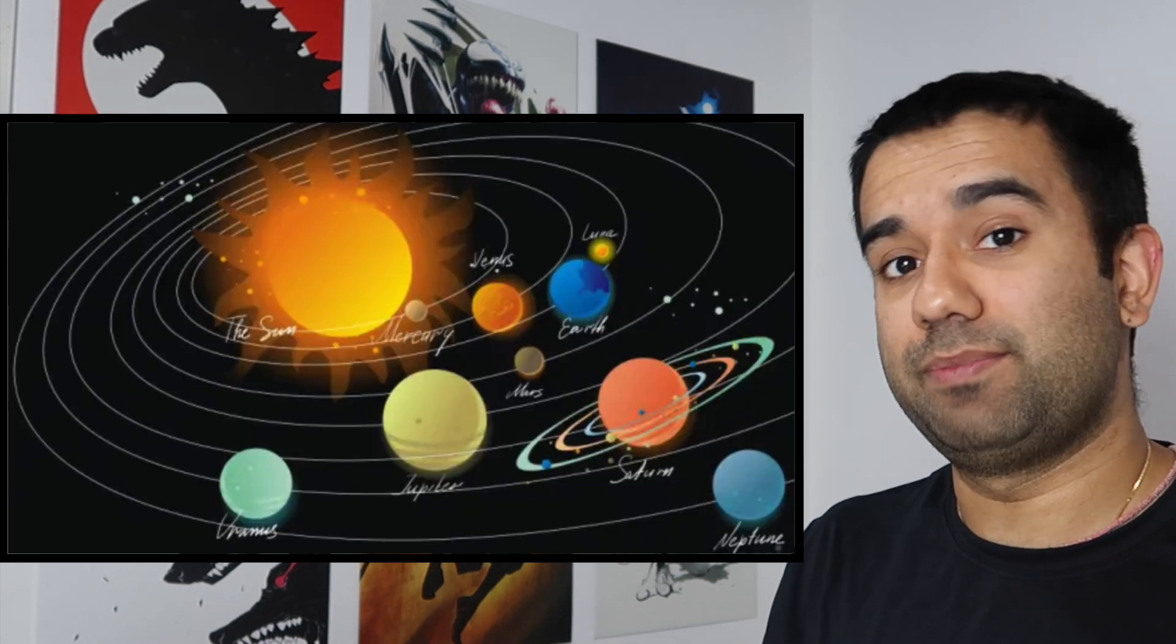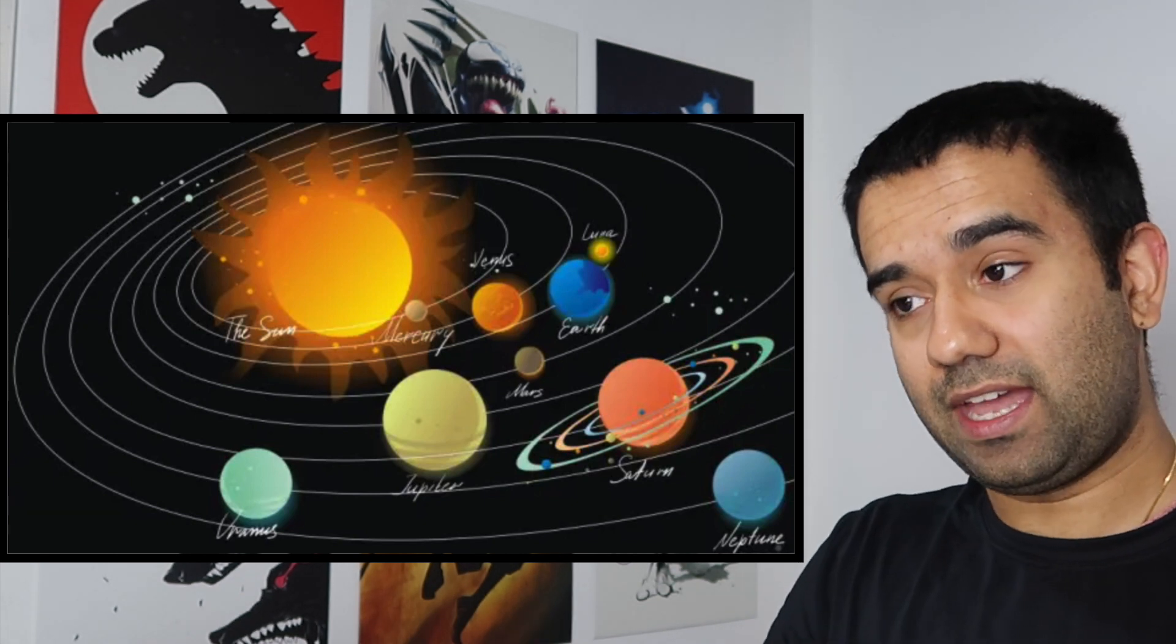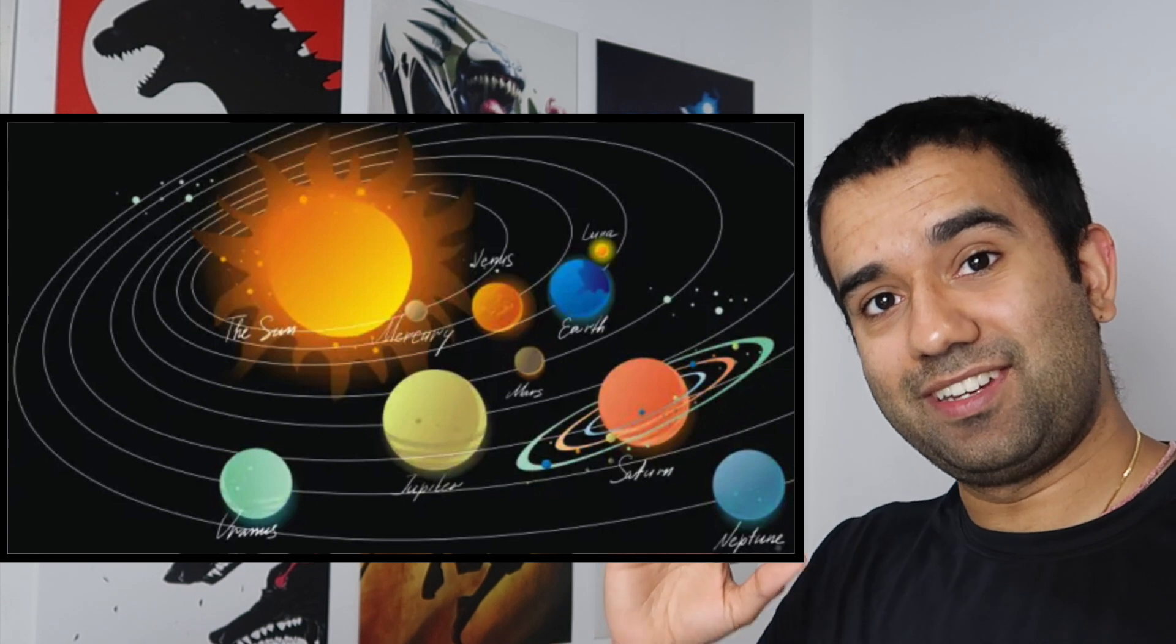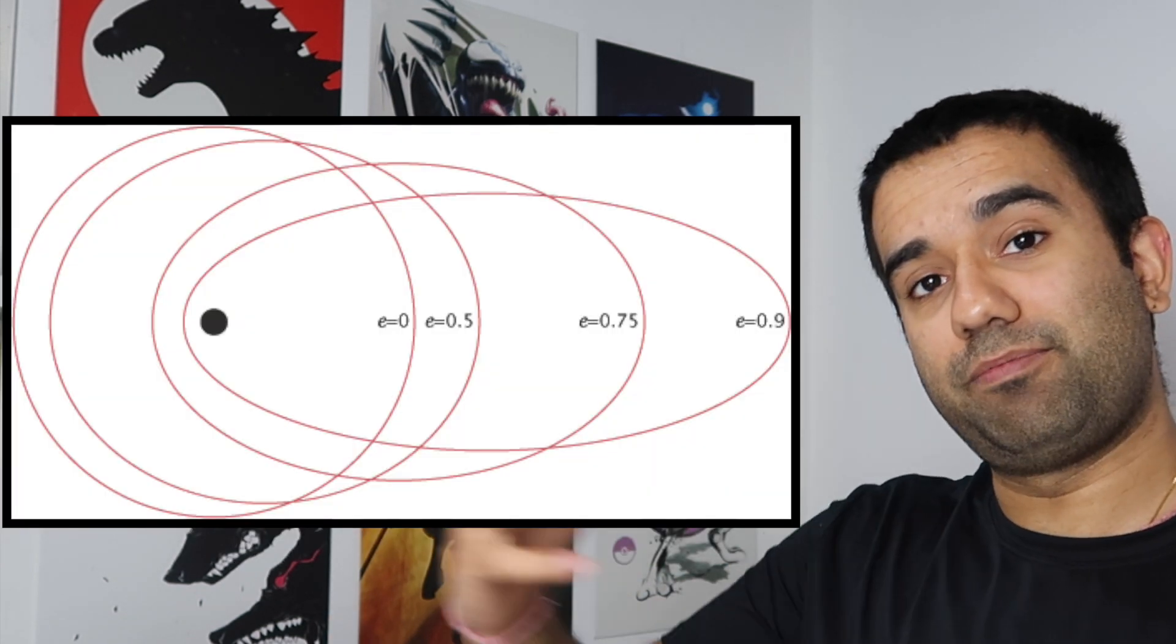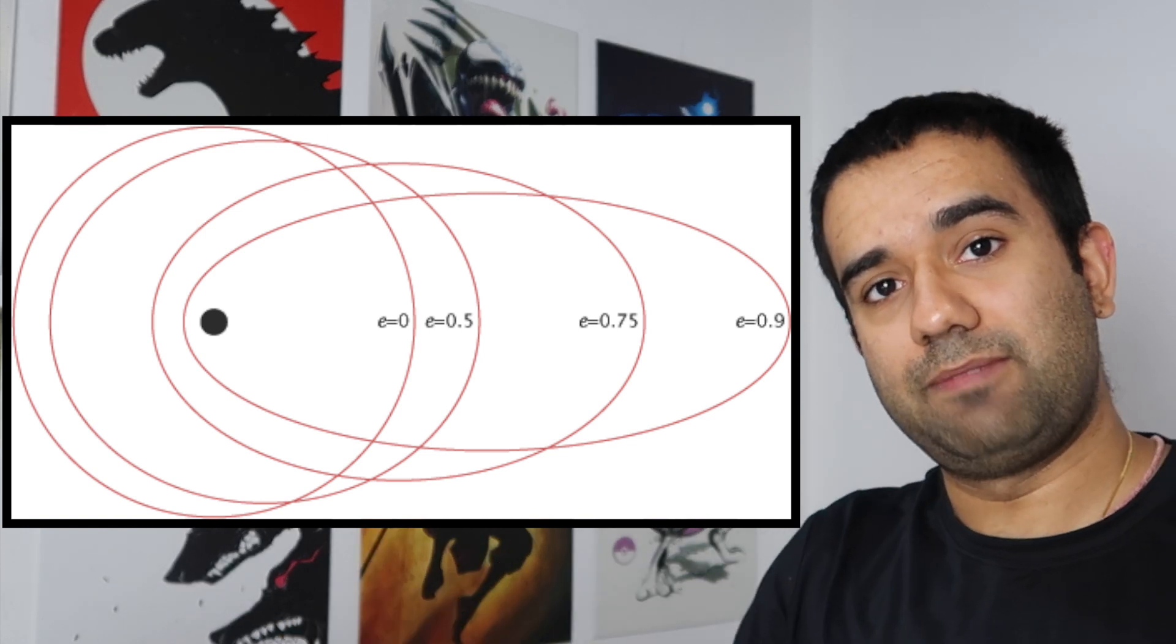Something really weird happens when objects are really far from their center of gravity which they're orbiting around, and they don't orbit in perfect circles. They orbit in the shape of an ellipse. This is called an eccentric orbit. And if you actually look at how the planets are orbiting around the Sun, you'll see that they're in elliptical shape. And the farther the planet is from its center of gravity that it's orbiting, the more elliptical the shape becomes.